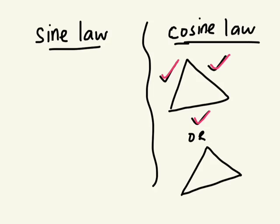Or, if you are given one angle and two adjacent side lengths. So an angle in between two side lengths, you would have to use cosine law because you don't have a complete ratio. Sine law uses ratios.